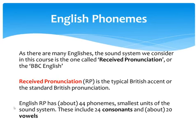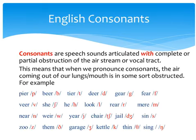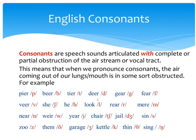English Received Pronunciation has about 44 phonemes — the smallest units of the sound system — and these include 24 consonants and about 20 vowels. Consonants are speech sounds articulated with complete or partial obstruction of the airstream or vocal tract. This means that when we pronounce consonants, the air coming out of our lungs or mouth is in some way obstructed.